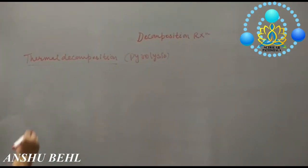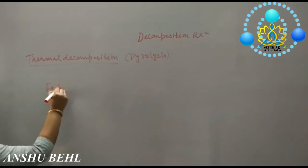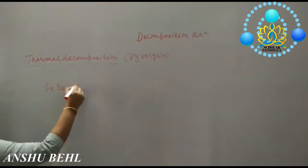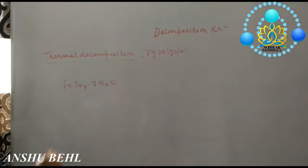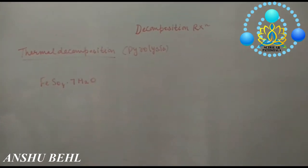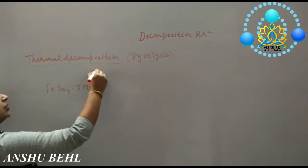Here first example I am taking of Ferrous Sulphate. It contains seven water molecules which are loosely held with it. It is also termed as Water of Crystallization.